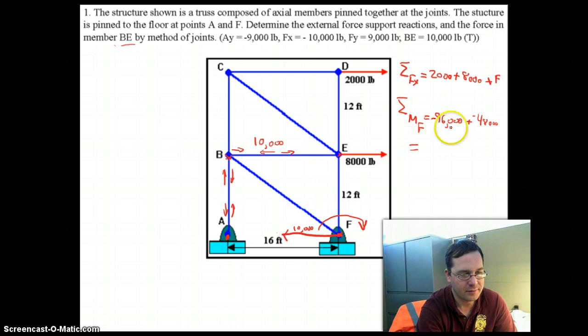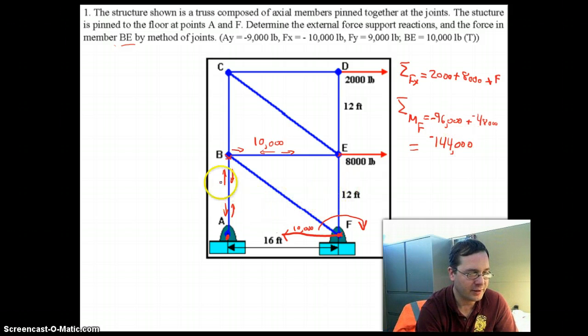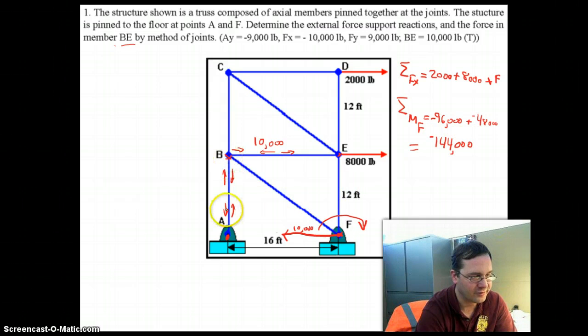So, the total moment is 48,000 plus 96,000, which equals negative 144,000 foot pounds. Now, the question is, what counteracts that moment? Well, what counteracts that moment is member AB pulling down at point B, which tells us that member AB is in tension.